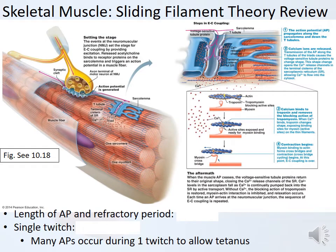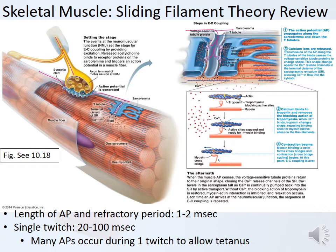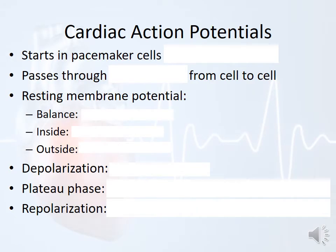A quick review of sliding filament theory. The length of a skeletal muscle action potential and its refractory period together is only about one to two milliseconds — very, very short. A single muscle twitch is about 20 to 100 milliseconds, and many action potentials happen during one twitch to allow tetanus. The key point: skeletal muscle action potentials are very, very short — one to two milliseconds. Cardiac action potentials are very different from skeletal muscle action potentials.